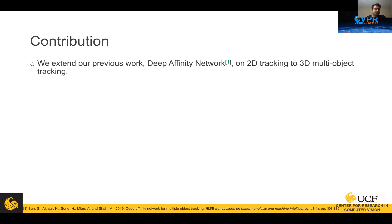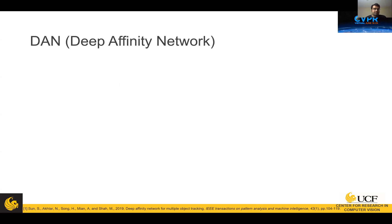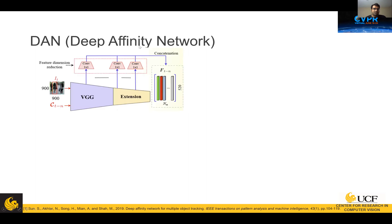Our contribution extends our previous work, the Deep Affinity Network, published in TPAMI, which was a 2D tracking method. We extend it to 3D multi-object tracking. We use PointNet to extract features from point cloud data and achieve competitive results on both the KITTI and GRDB datasets. I will first describe the original Deep Affinity Network, then explain how we build on it for 3D.